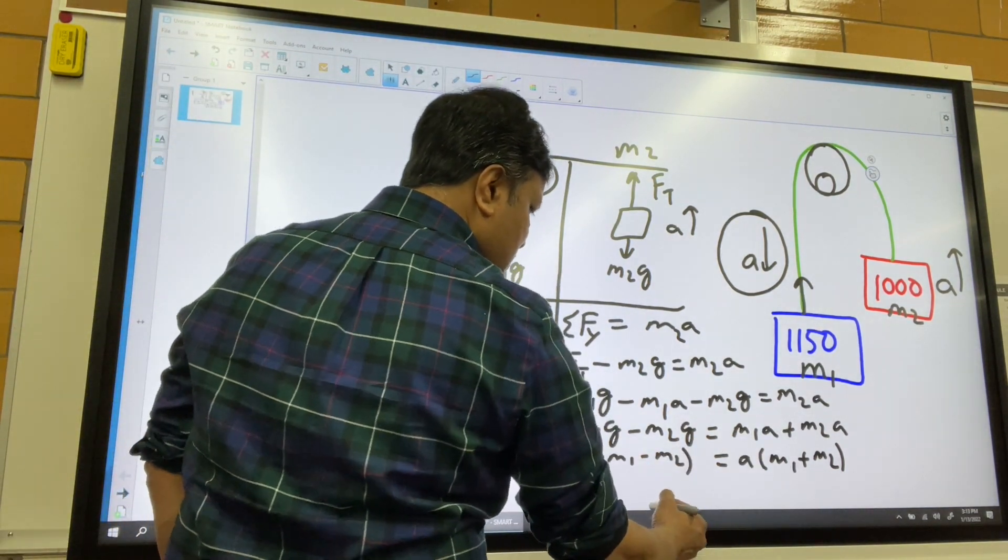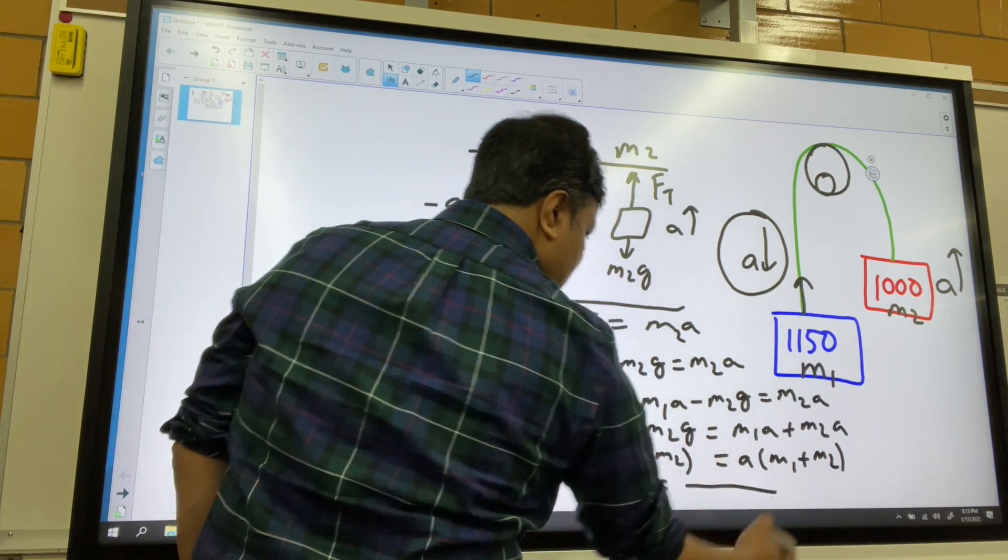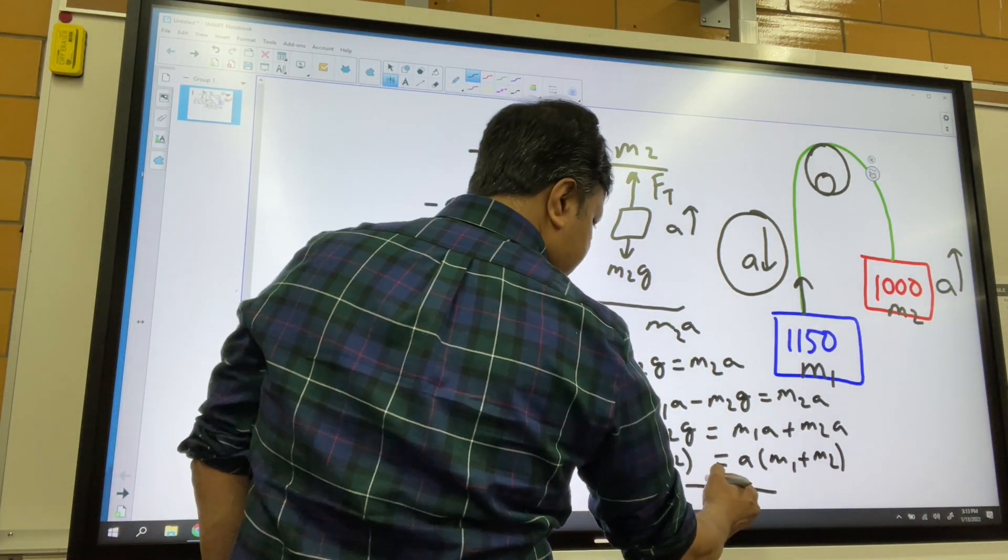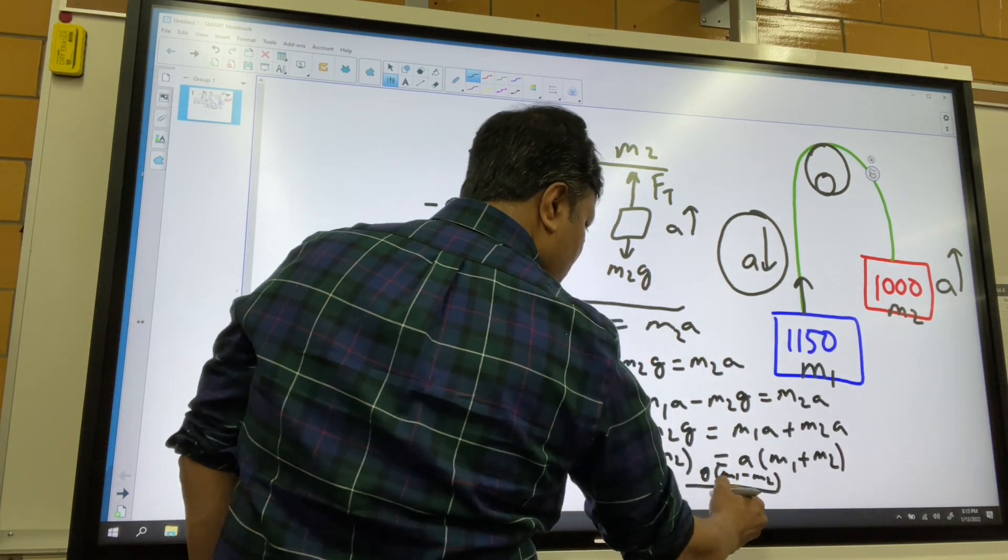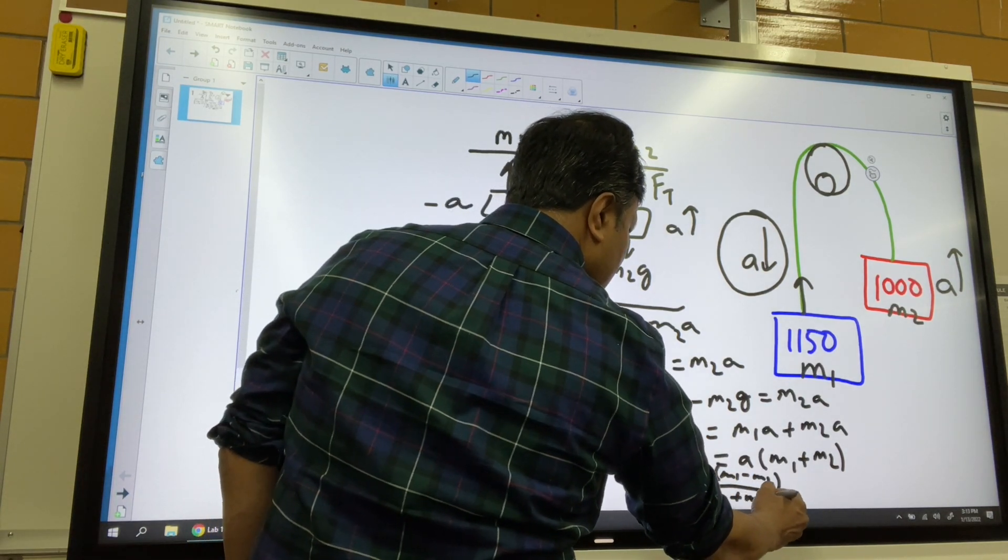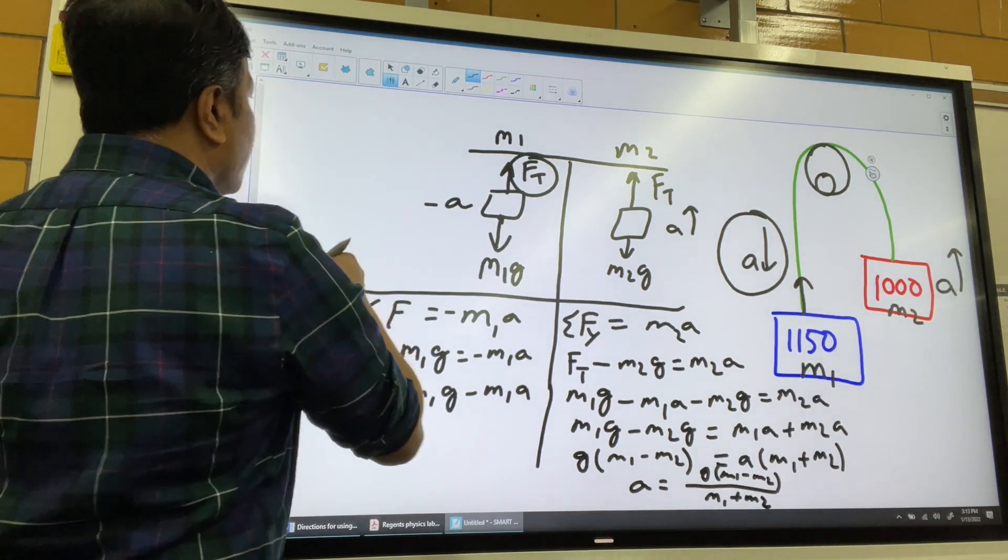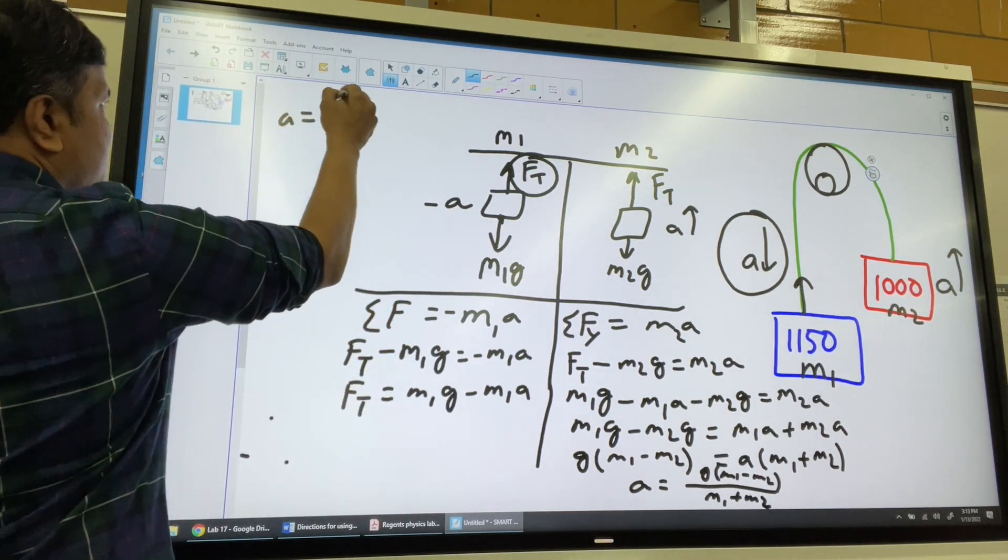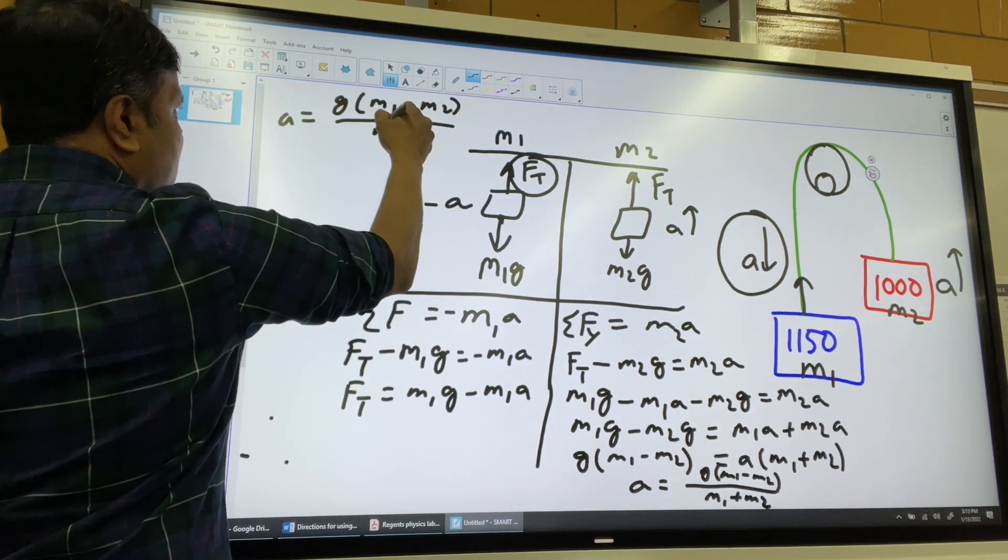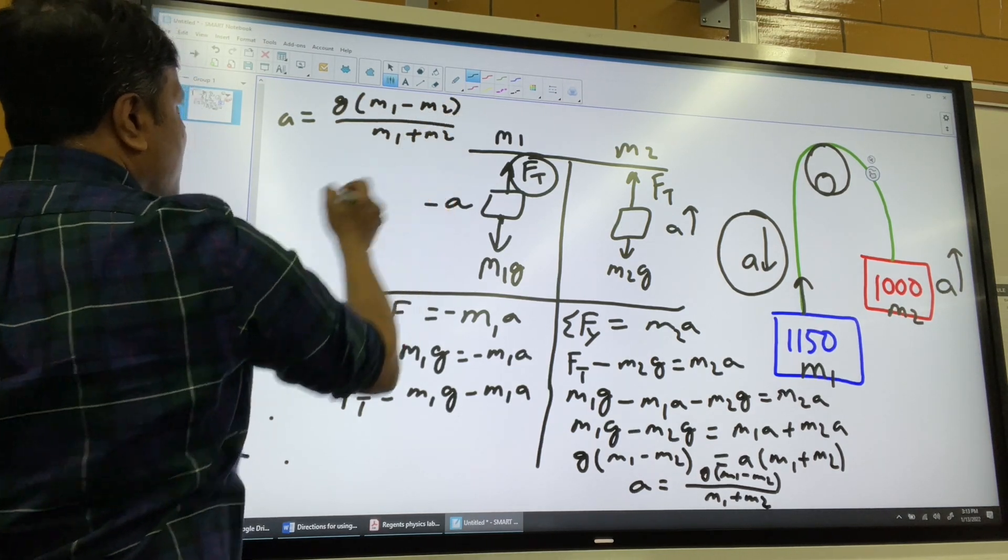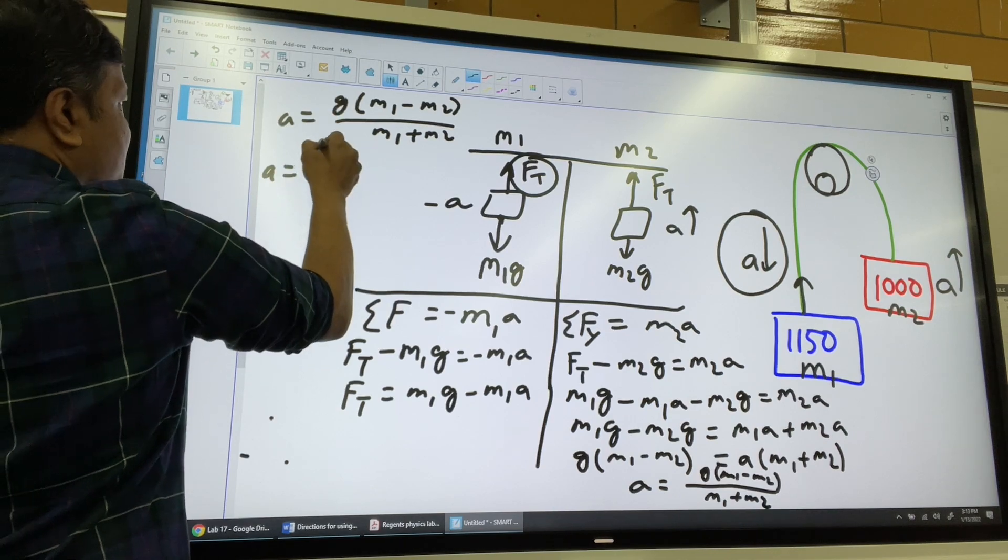What does that mean? A is equal to G times M1 minus M2 over M1 plus M2. I'm going to write it down over here. Acceleration is G times M1 minus M2 over M1 plus M2.